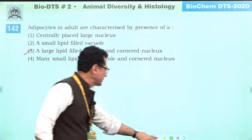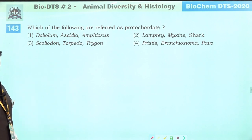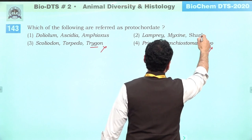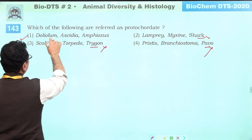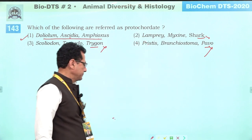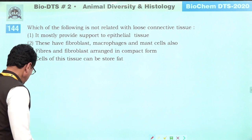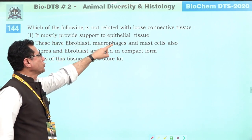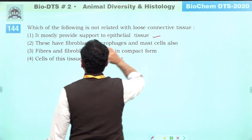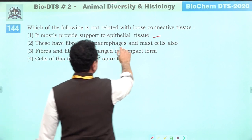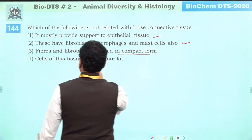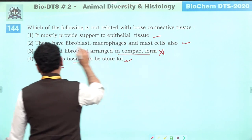Which are referred to as proto-chordates? These are primitive chordates — they include simple chordates. Which is not related to loose connective tissue? Loose connective tissue mostly supports epithelial tissue, has fibroblast cells, macrophages, and mast cells. Fibers and fibroblast in compact form — that is dense connective tissue, not loose. So answer is three.